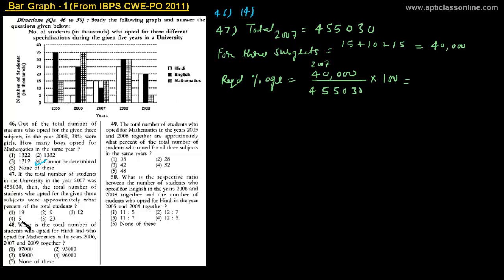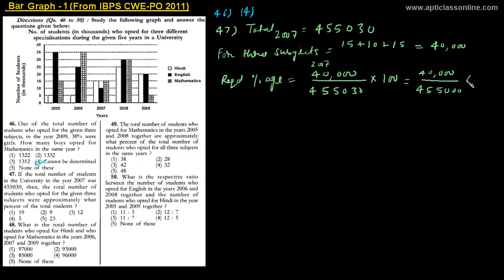Looking at the options — 19, 9, 12, 5, and 20 — there is no 'none of these' option, so we must choose from these. The options are not very close to each other, so we can approximate 455,030 to 455,050, since 30 is a very small figure compared to 455,000. So we compute 40,000 divided by 455,050 multiplied by 100.